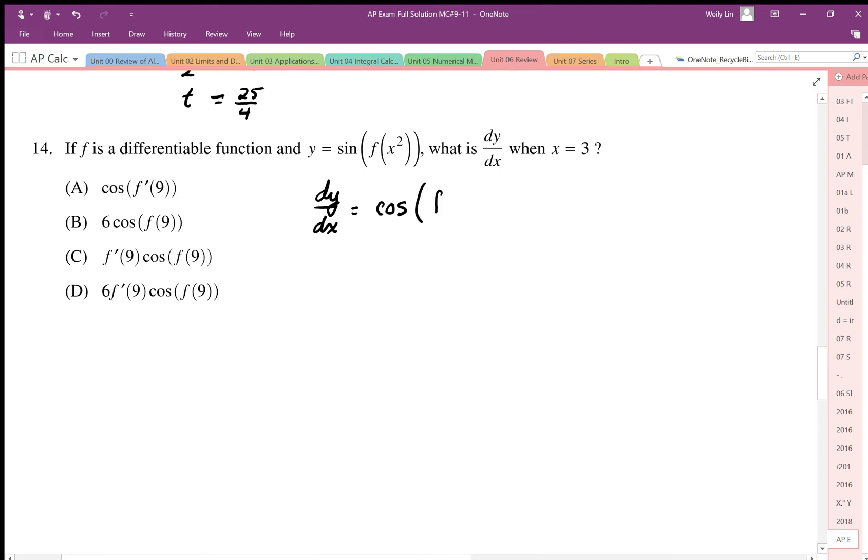Derivative of sine is cosine, and I end up with f of x squared. I need to go differentiate the next layer. Well, I don't know what f is, so I need to just differentiate using notation. Now I have another embedded function, so I need to then differentiate the x squared using chain rule as 2x.